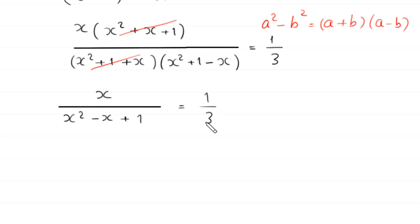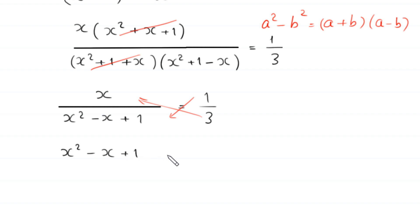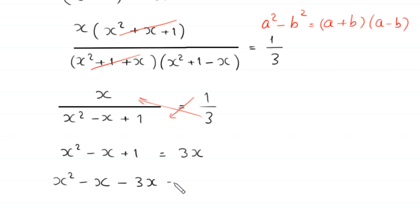Now from here we use cross multiplication. We multiply 1 by the expression and multiply 3 by x. So 1 times x squared minus x plus 1 is equal to 3x. Moving 3x to the left hand side: x squared minus x minus 3x plus 1 is equal to 0, giving x squared minus 4x plus 1 equals 0.